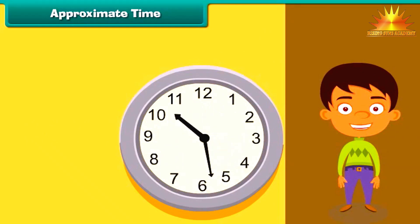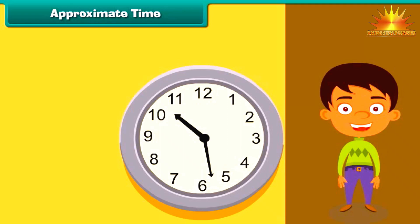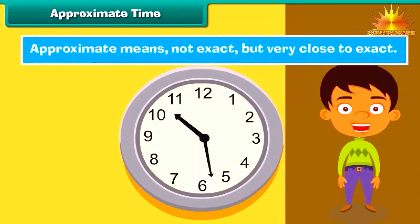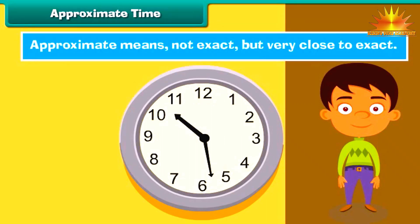Look at the clock face. Can you tell the time? It is not yet 10:30, but it is very close to 10:30, so the approximate time is 10:30. Approximate means not exact, but very close to exact.